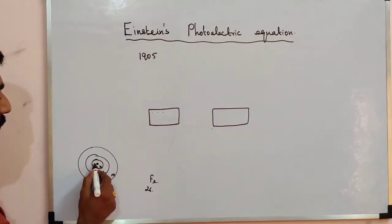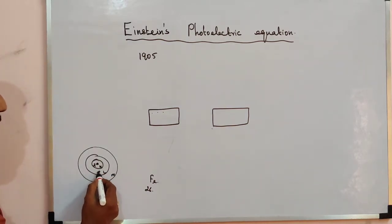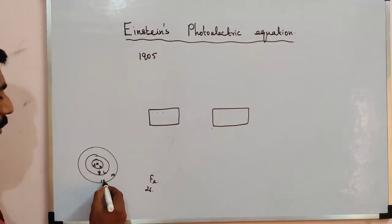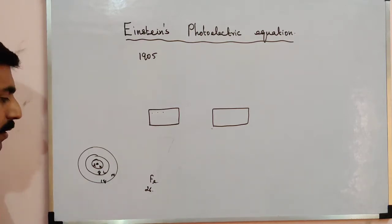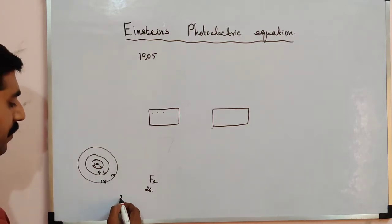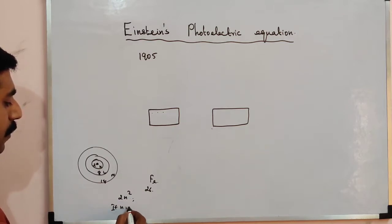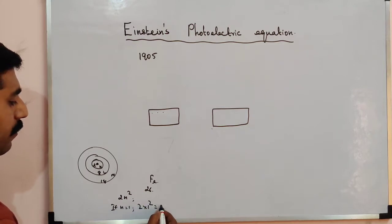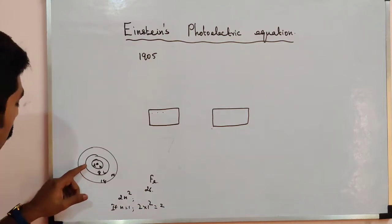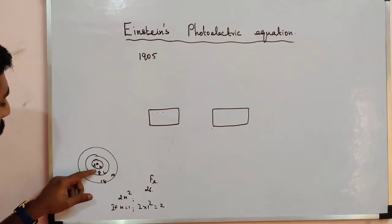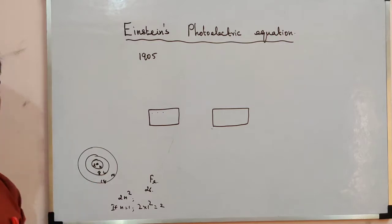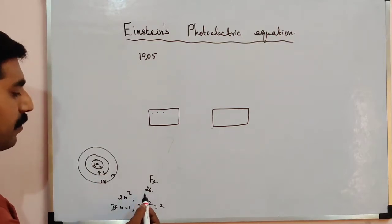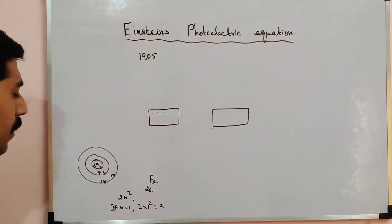For iron, the first shell has 2 electrons, the second shell has 8 electrons, and the third shell has 18 electrons, based on the formula 2n². If n equals 1, then 2 × 1² = 2. So 2 + 8 = 10, 10 + 18 = 28. But iron has only 26 electrons, so the outermost level is only partially filled.